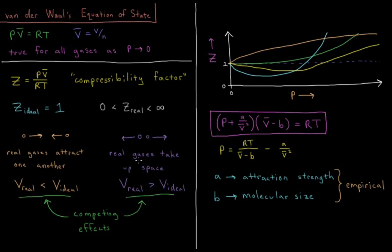Since real gases take up space, once you compress them far enough, they're going to start repelling each other. The effect of that is that the volume of a real gas when it's highly compressed would be greater than that for an ideal gas. When this effect is winning, we're going to get a compressibility factor which is bigger than one.